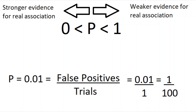For example, a p-value of 0.01 means that finding a false positive — that is, finding an association where there is no real relationship between the trait and the genetic variant — where the association is of this strength, would be expected once for every 100 trials in samples of the same size.